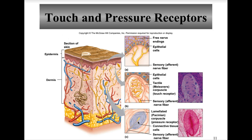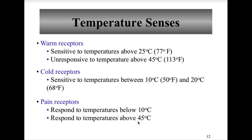Temperature senses use two types of receptors. Warm receptors are sensitive to temperatures above 25°C (77°F) and are unresponsive above 45°C (113°F), at which point pain receptors are also triggered, producing a burning sensation. Cold receptors are sensitive to temperatures between 10°C (50°F) and 20°C (68°F); below 10°C, pain receptors are triggered, producing a freezing sensation. Both warm and cold receptors undergo rapid sensory adaptation.